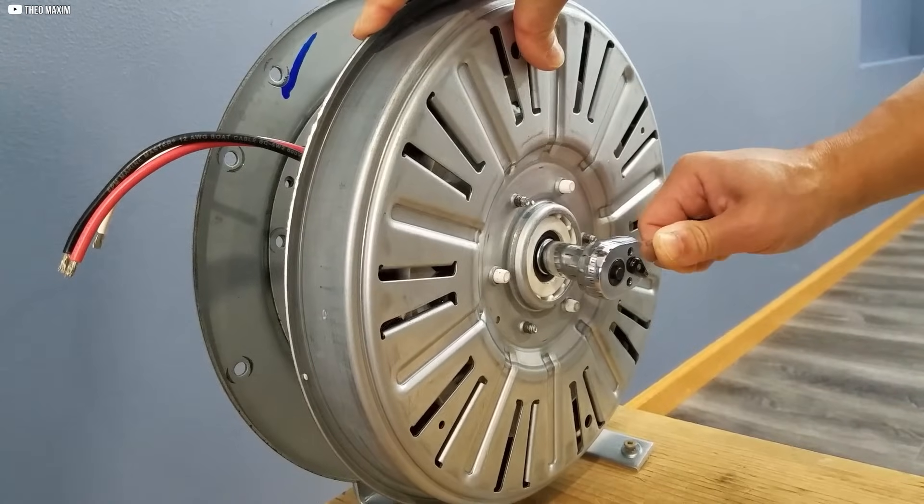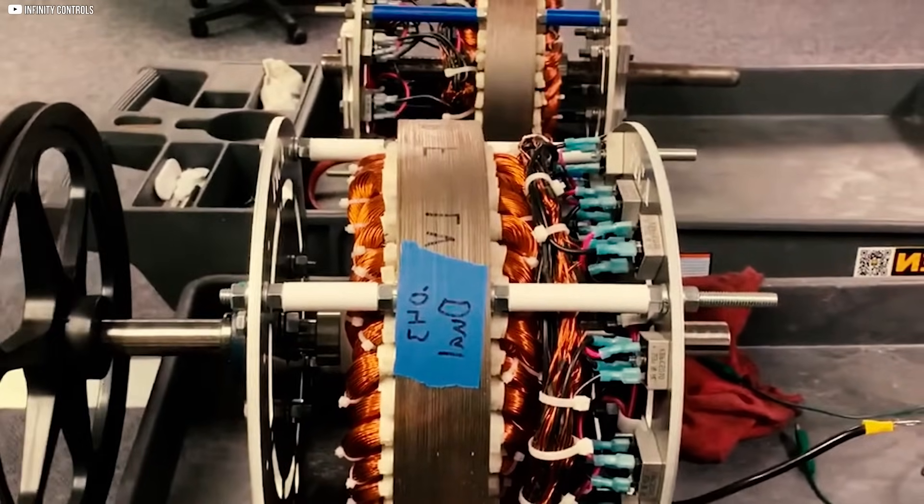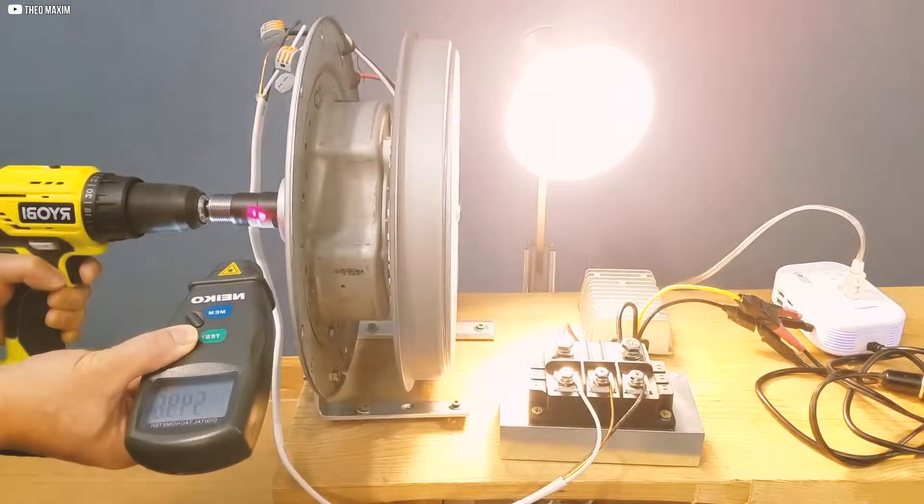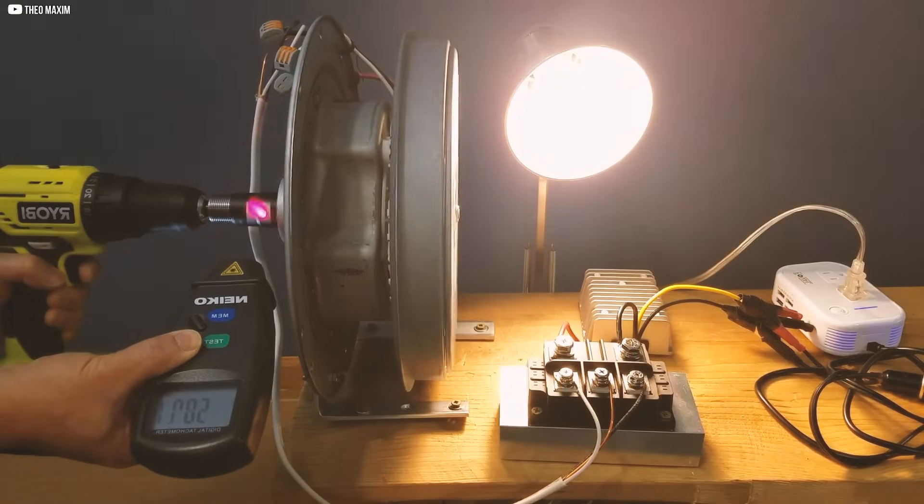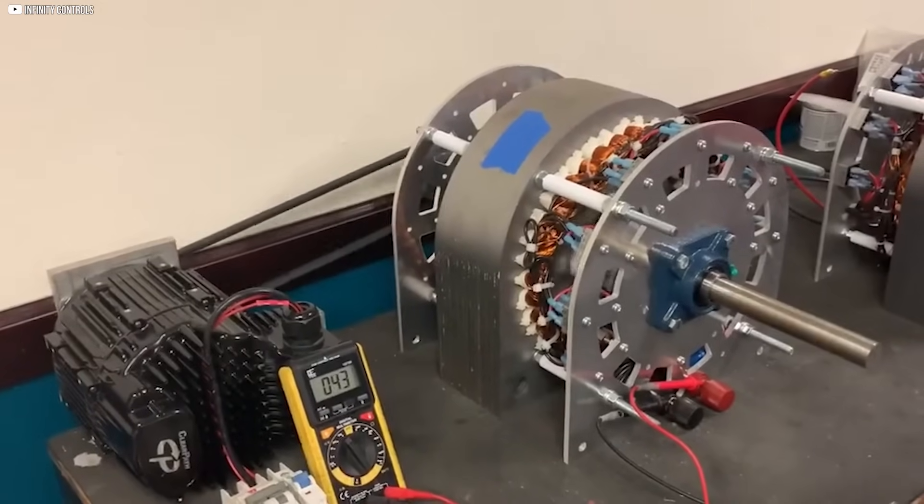The iGenerator's zero-cogging design changes everything. It requires far less torque to operate, slashing fuel use and reducing harmful emissions. The result? Cleaner air, quieter operation, and a much smaller carbon footprint.